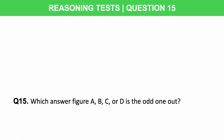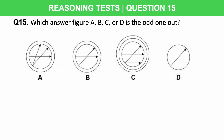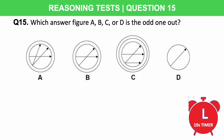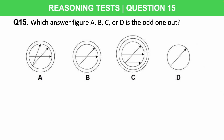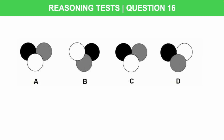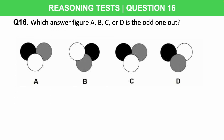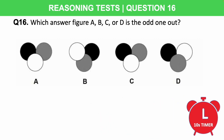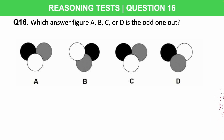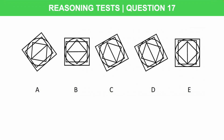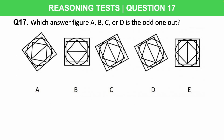Now try one yourself: which figure — A, B, C, or D — is the odd one out? 10 seconds to try this. Let me know in the comments if you spotted it. Then another abstract reasoning question: which figure is the odd one out — A, B, C, or D? 10 seconds. I respond to absolutely everyone who leaves comments, and I'm more than happy to help you prepare effectively.